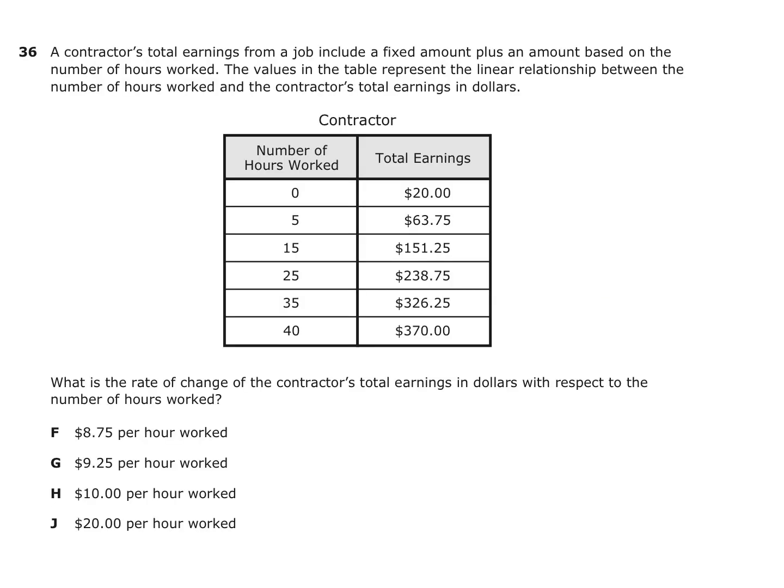Number 36: A contractor's total earnings from a job include a fixed amount plus an amount based on the number of hours worked. The values in the table represent the linear relationship between the number of hours worked and the contractor's total earnings. What is the rate of change of the contractor's total earnings? When it says rate of change, we're looking for slope, since it is a linear relationship. So all we have to do is find the slope.